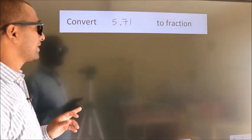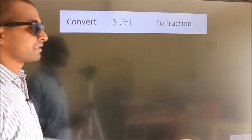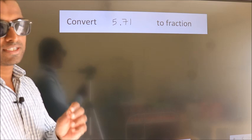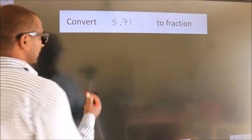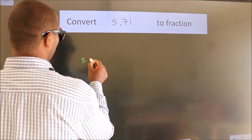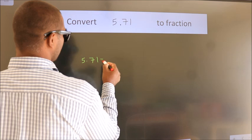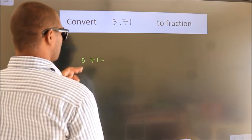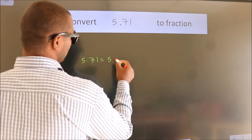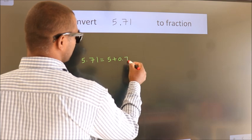Convert 5.71 to fraction. How do we convert it? Given is 5.71. First we should break this into 5 plus 0.71.